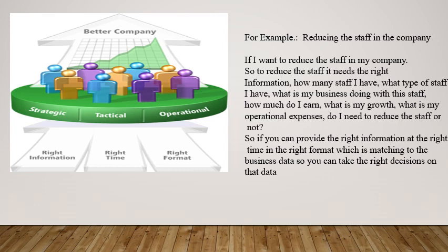Here we will take an example of reducing the staff in the company. If I want to reduce the staff, it needs the right information: how many staff I have, what type of staff I have, what my business is doing with the staff, how much I earn from that staff, what is my growth, what are my operational expenses, and whether I need to reduce the staff or not. So if you have the right information in the right time and right format matching the business data, you can take the right decisions.